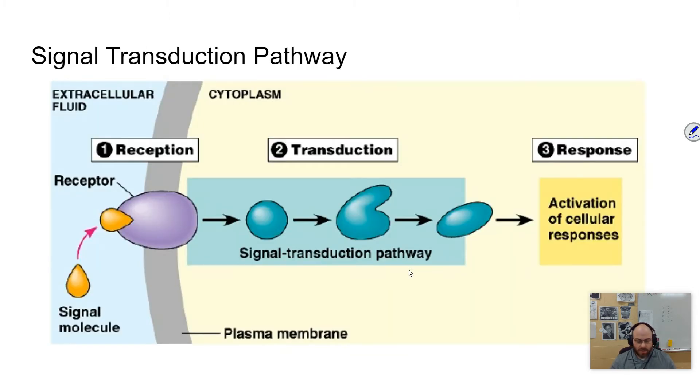A little bit more about transduction, there's this process called phosphorylation, which is like ATP had that third phosphate, and when it put a phosphate on something, it turned it on. And so typically transduction is going to be a series of phosphorylation cascades is what we want to call it.